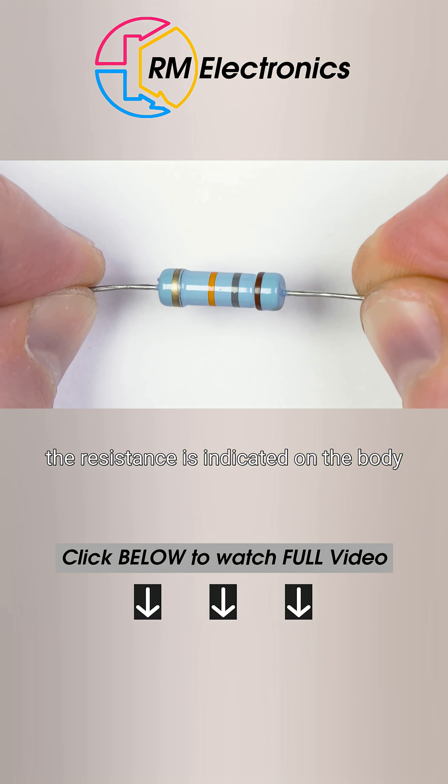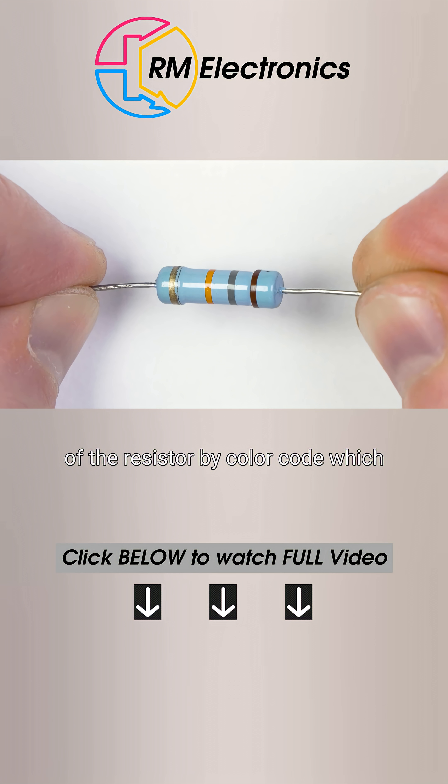The resistance is indicated on the body of the resistor by color code, which allows anyone to read the value, no matter the orientation of the part on the board.